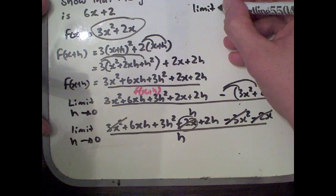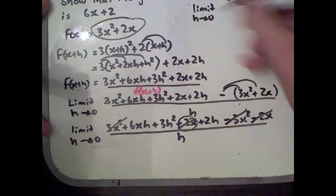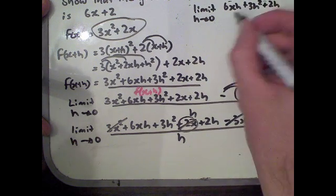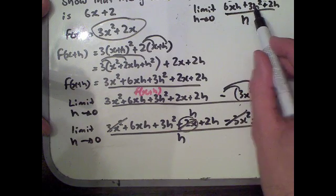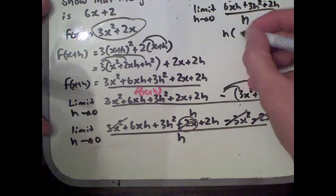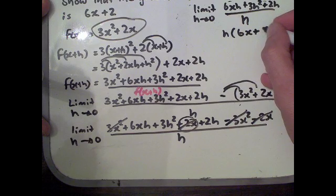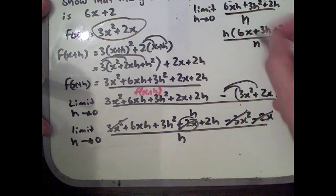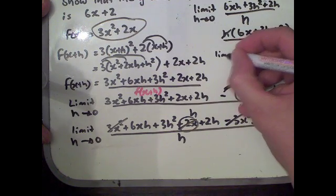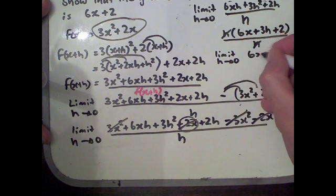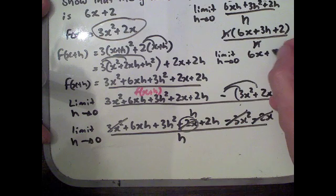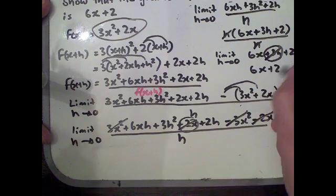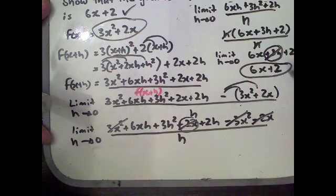We don't want to divide by 0, so we factor out h from the numerator, leaving 6x plus 3h plus 2, all divided by h. We cancel the h's and we're left with the limit as h tends towards 0 of 6x plus 3h plus 2. When h becomes 0, the 3h term disappears, and we're left with 6x plus 2, which is what we were after.